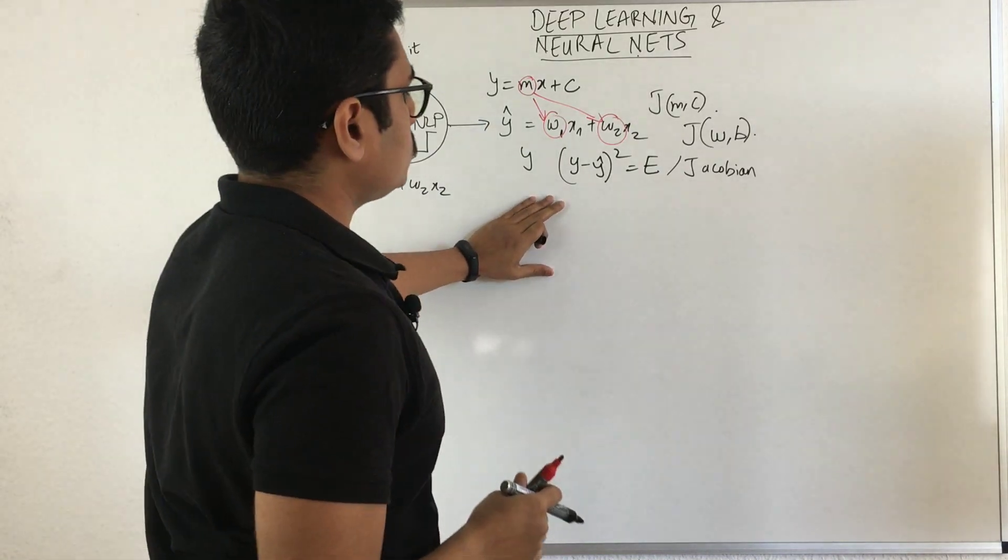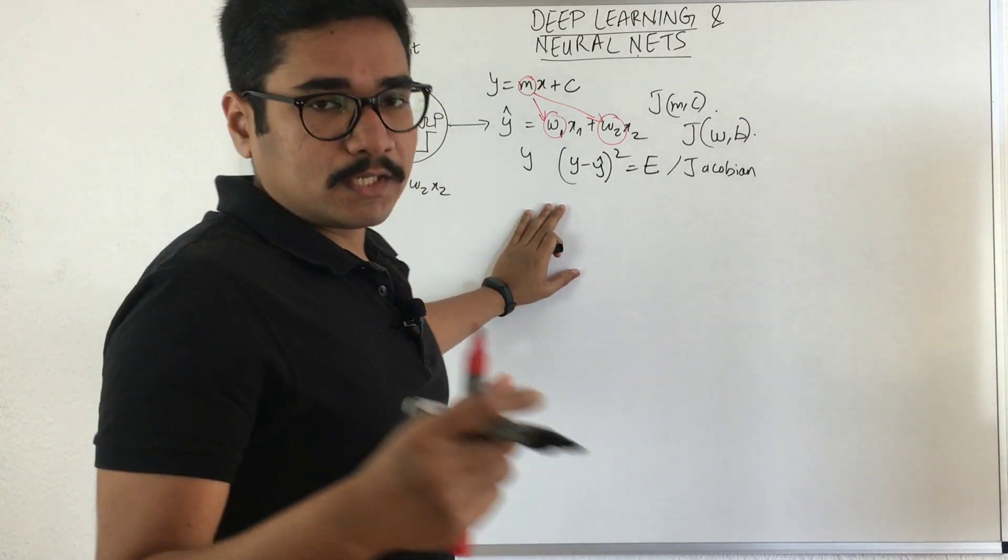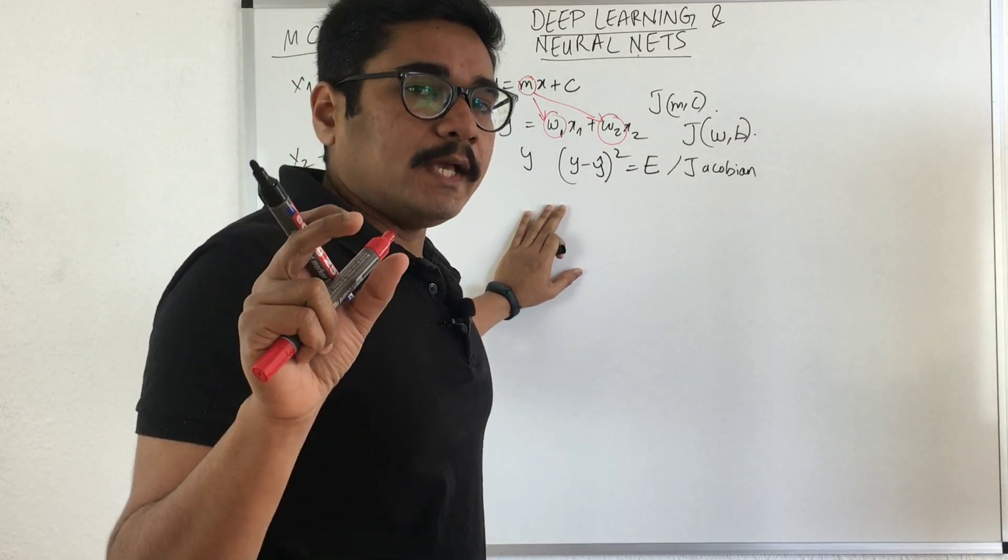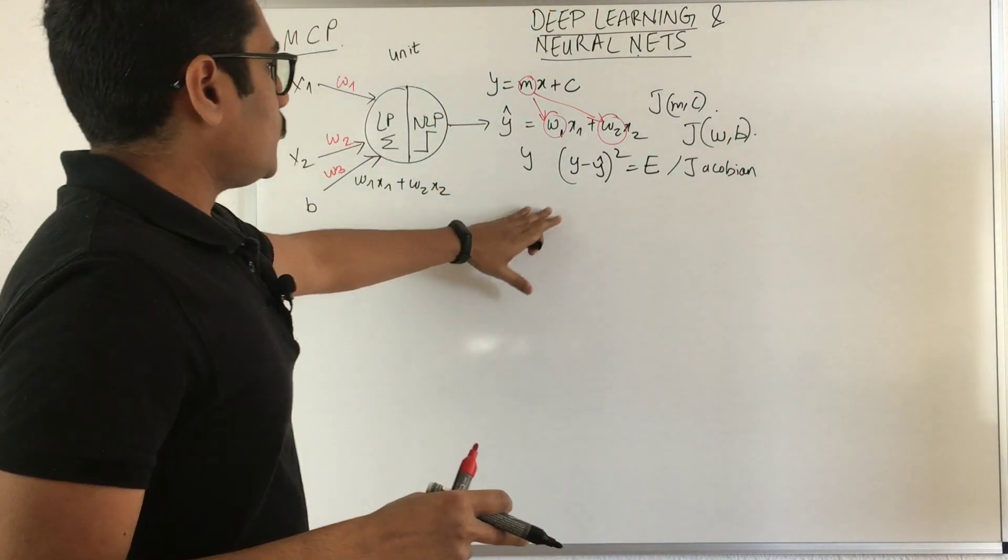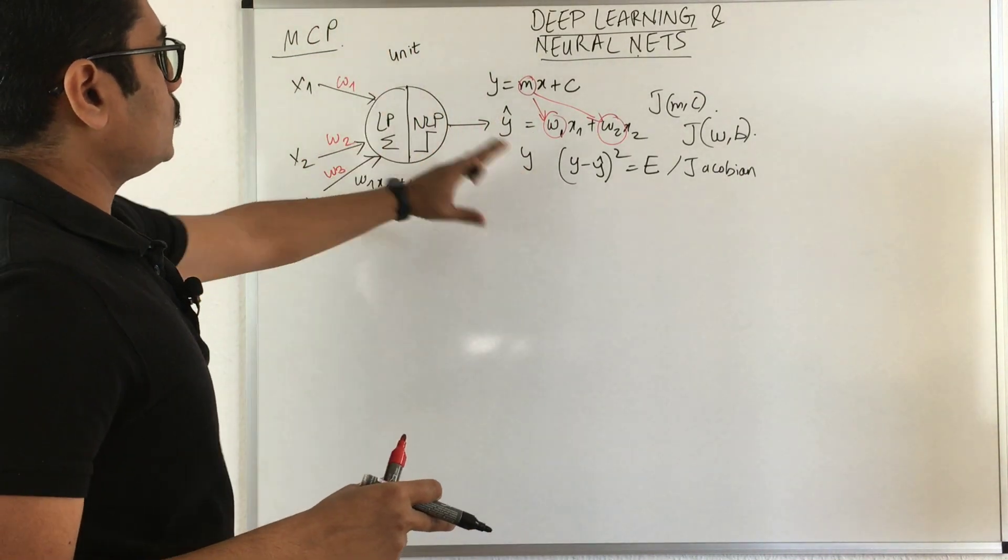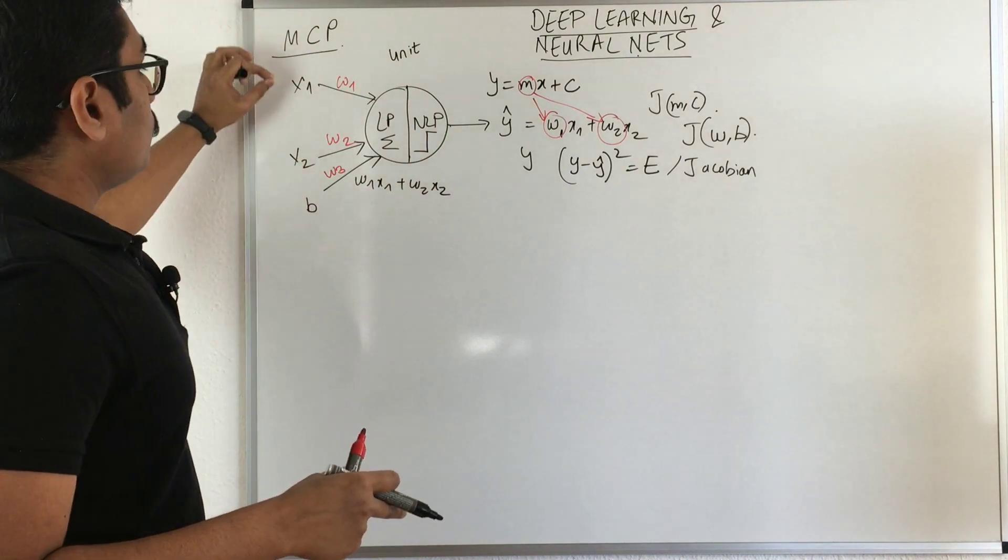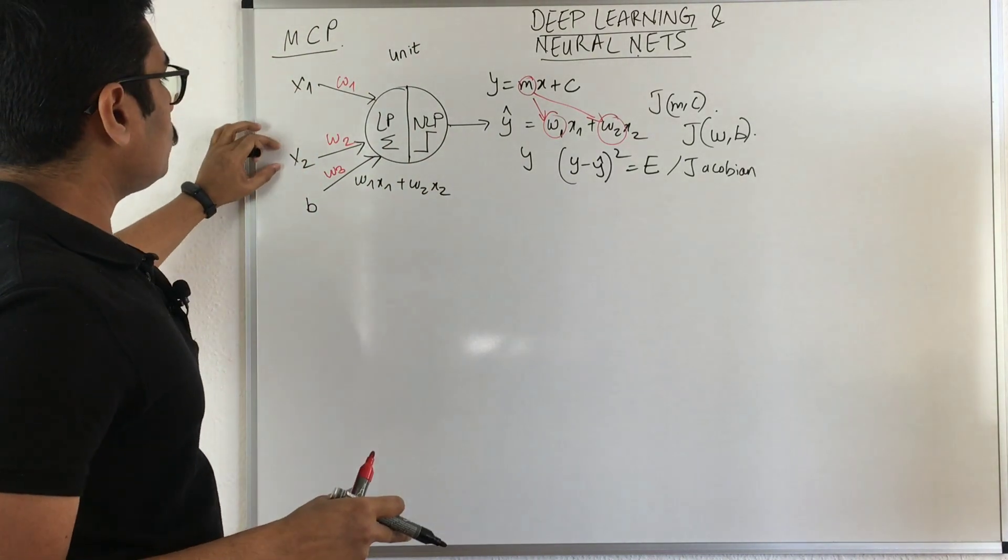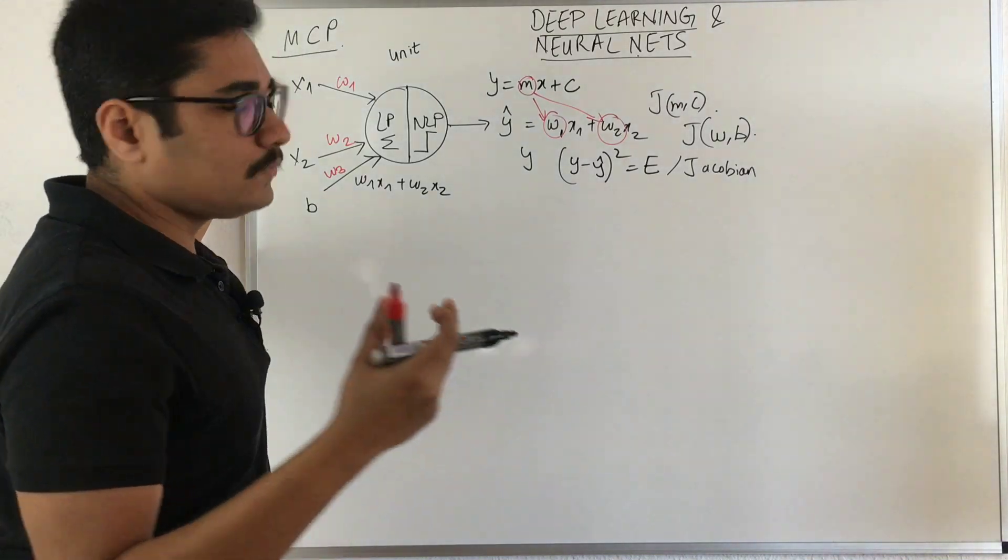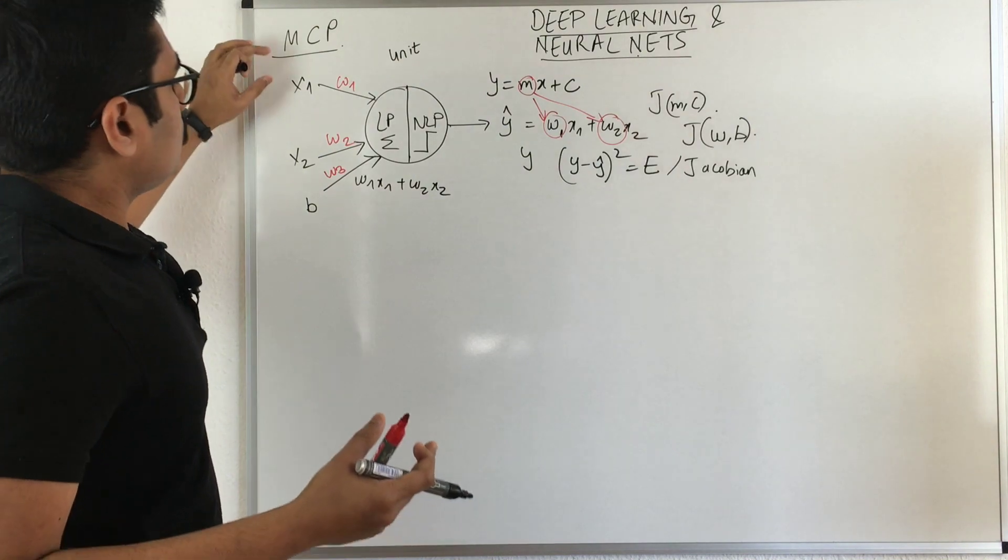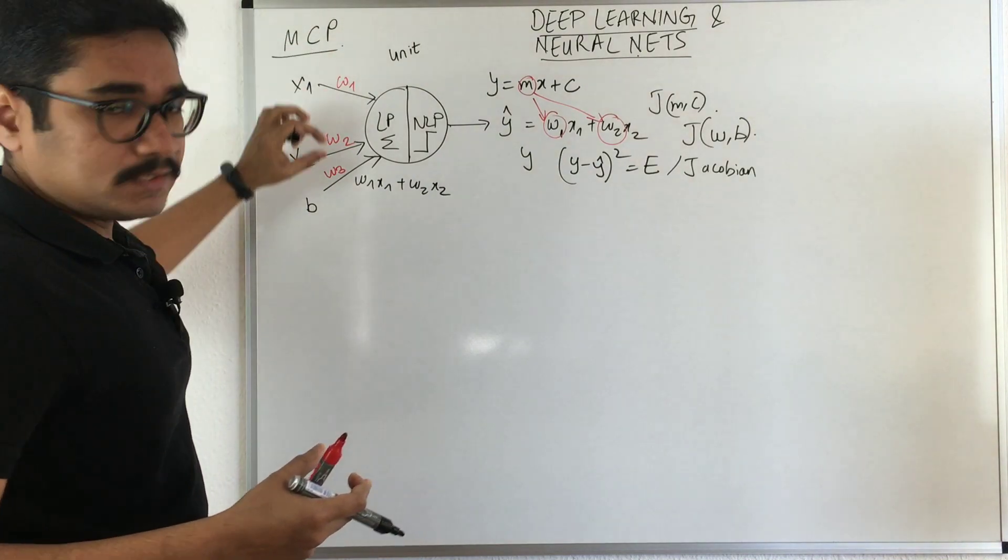We have obtained an output and we compare it with the output we already have. If there's a huge difference, then we go back to this particular neuron and adjust the weights. We will not touch our input. Input is in our original form that we desire to give to our neural network.